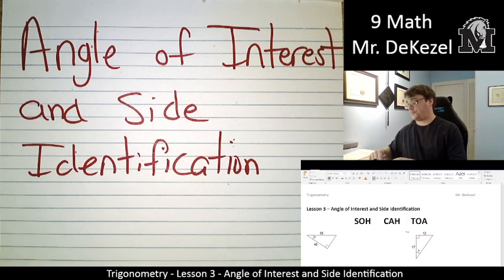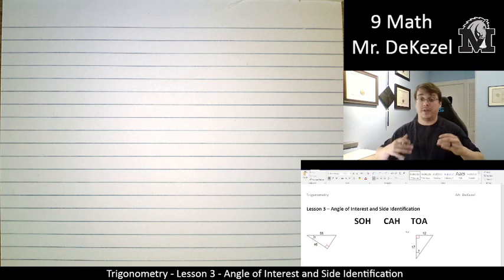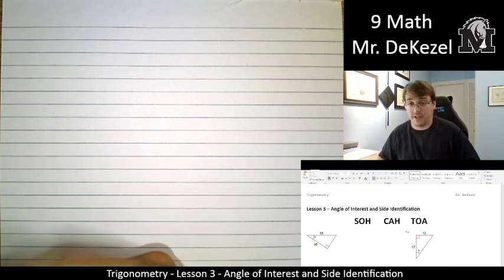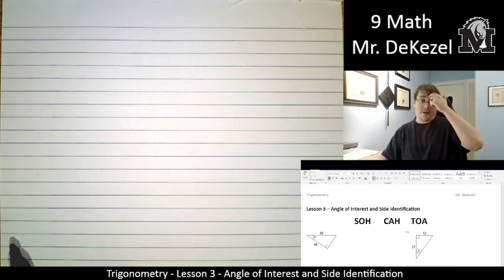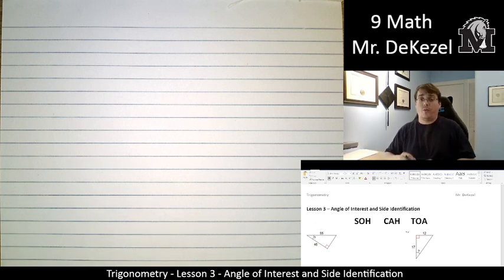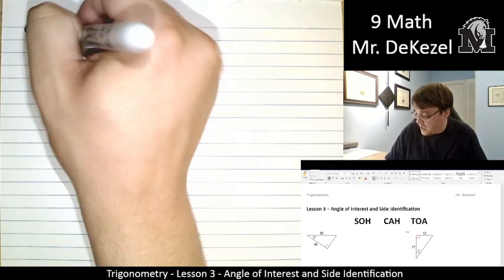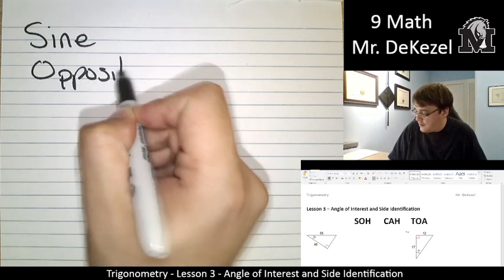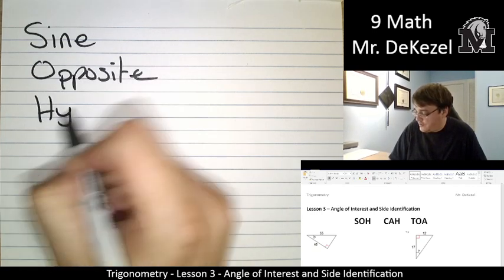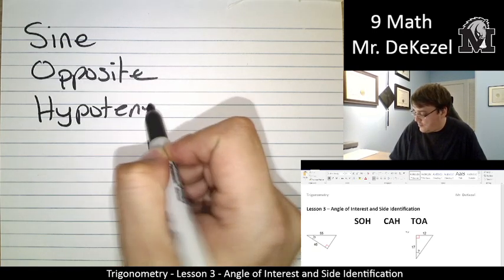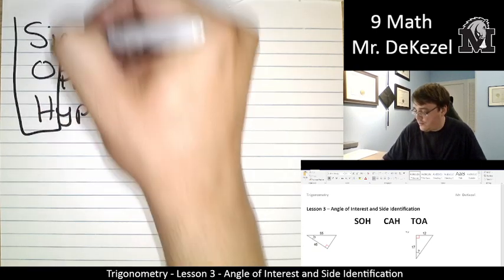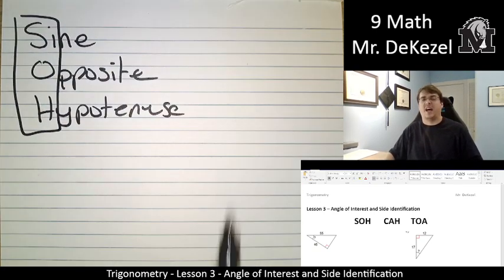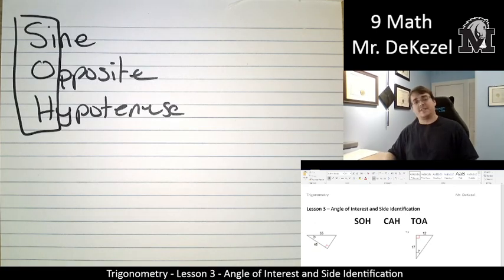Essentially, what we are doing when we are talking about the angle of interest and side identification is we are determining which of these three trigonometric ratios to use. So are we going to use sine, where that is the opposite side and the hypotenuse. So that's where the SOH CAH TOA comes from. SOH CAH TOA would be sine if we have opposite and hypotenuse for sides.